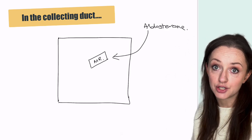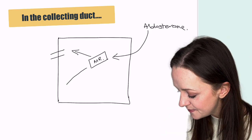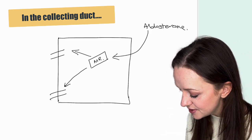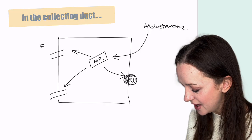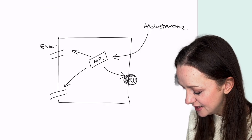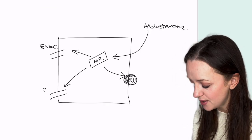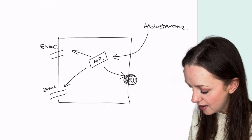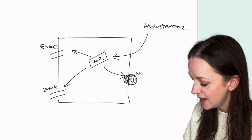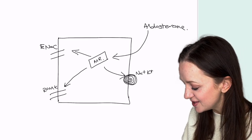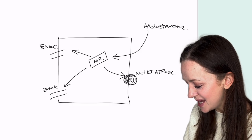This receptor is basically a transcription factor, and that's going to do a couple of things. It is going to place a few channels here. We have the ENaC channel, which is the epithelial sodium channel. We have ROMK, which is just a potassium channel, and we have sodium-potassium ATPase.